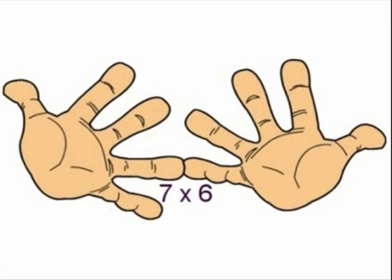Second step is those fingers touching and any dangling below. In this case there are three. That is thirty. Thirty plus the twelve is forty-two. So the answer to this calculation is 7 times 6 equals 42.